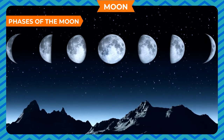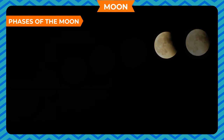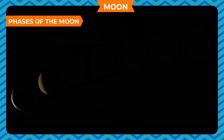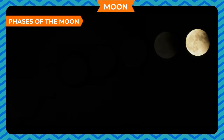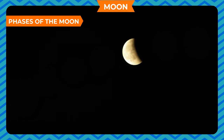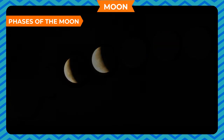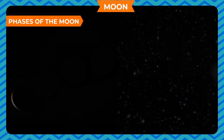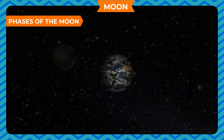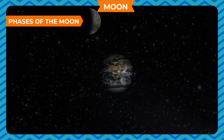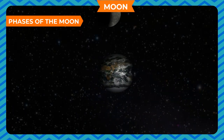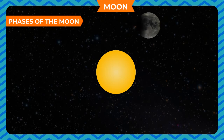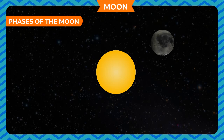Phases of the Moon: As viewed from the Earth, the shape and size of the moon keeps changing periodically. This is called the different phases of the moon. The moon shows different phases due to the revolution of the moon around the Earth and the revolution of the Earth around the Sun.